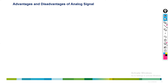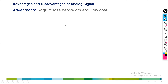Let's see what are the advantages of analog signal first. It requires less bandwidth and is low cost, because in the analog signal, if you have 64 kbps of bandwidth, you can make a call. To make one single call, 64 kbps bandwidth is enough. So that is less bandwidth and also low cost.